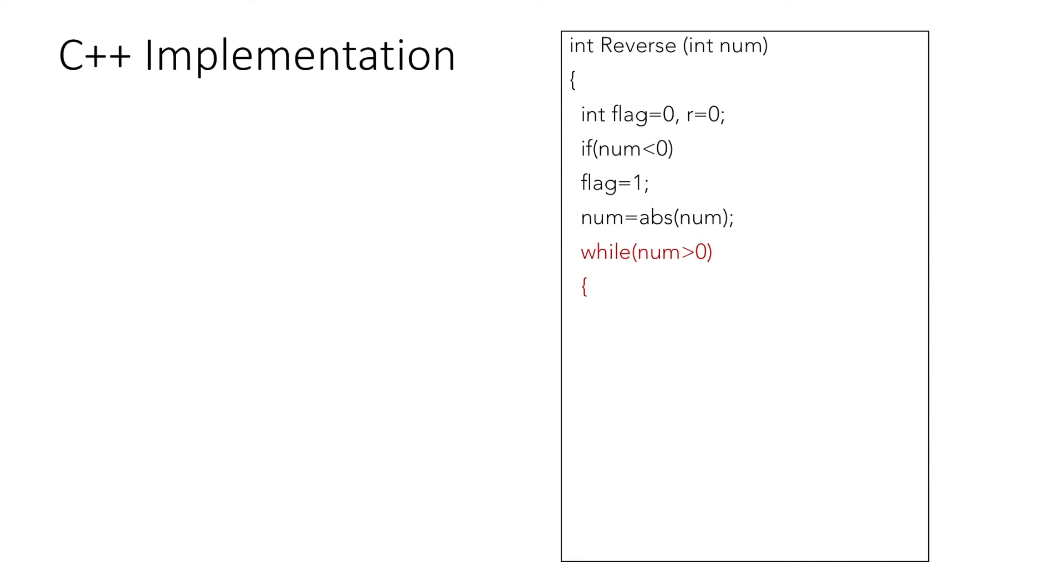So next we will start our while loop which will run until num is greater than 0. Next we will multiply r with 10 and add the last digit of num to it. Next we will divide the num by 10 and repeat our loop for every digit.